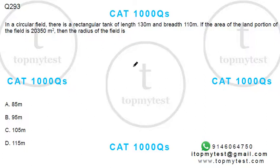In a circular field, there's a rectangular tank of length 130 and breadth 110. So this is your circular field in which the area of the land portion, which means the area of the rest of the field, is 20350. Find the radius.